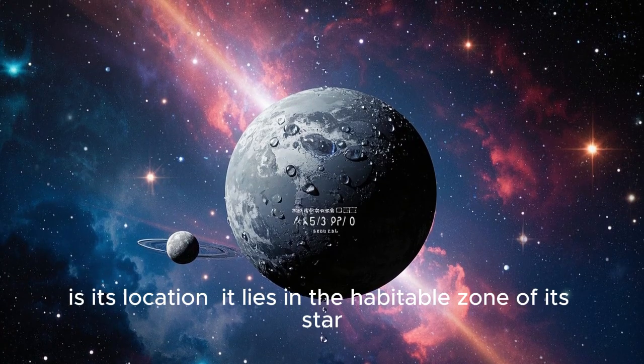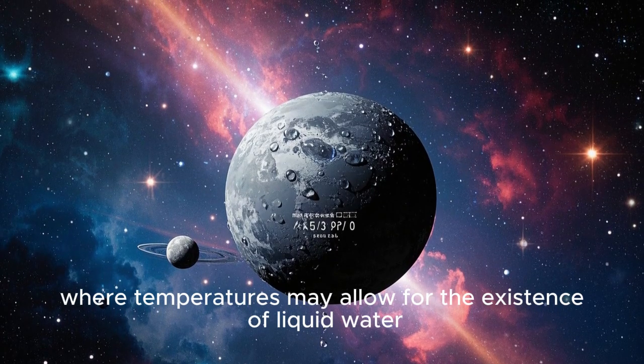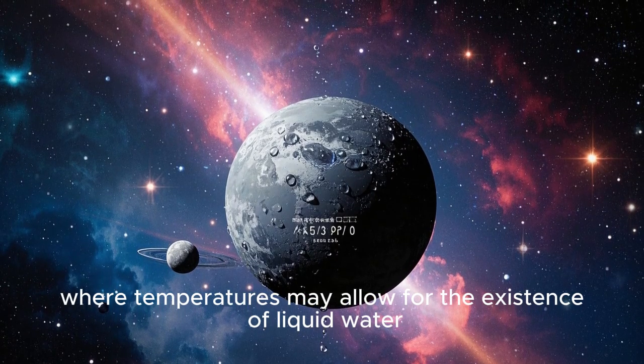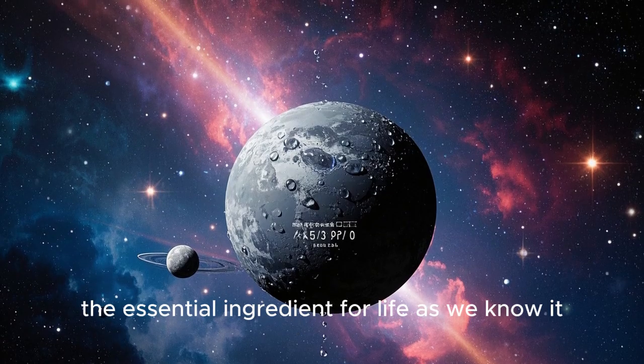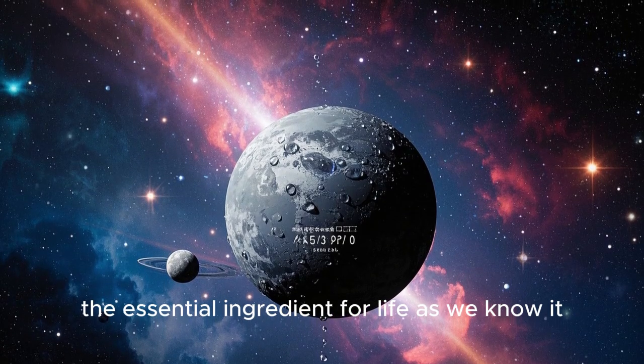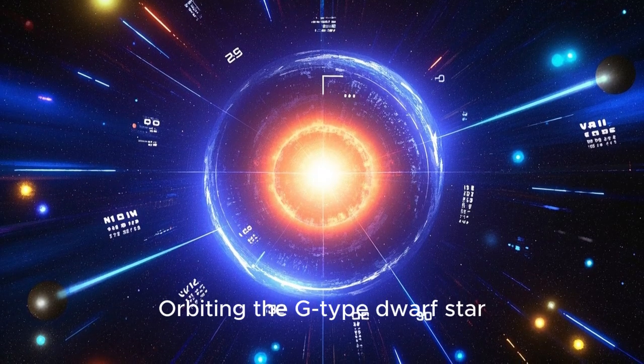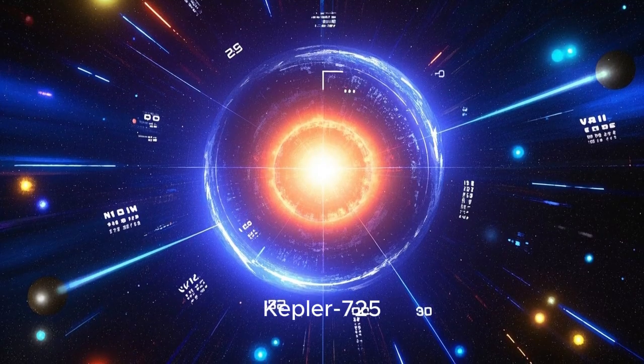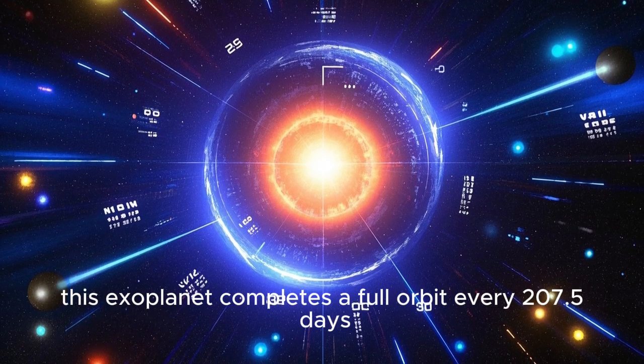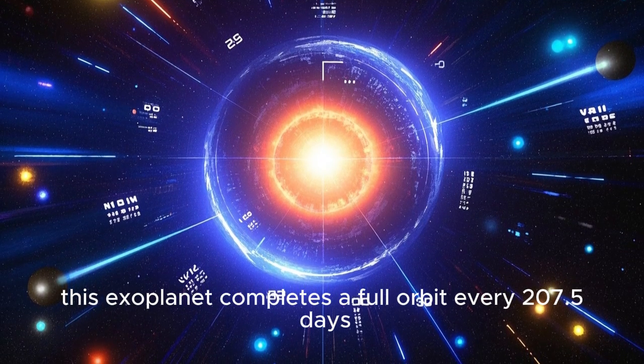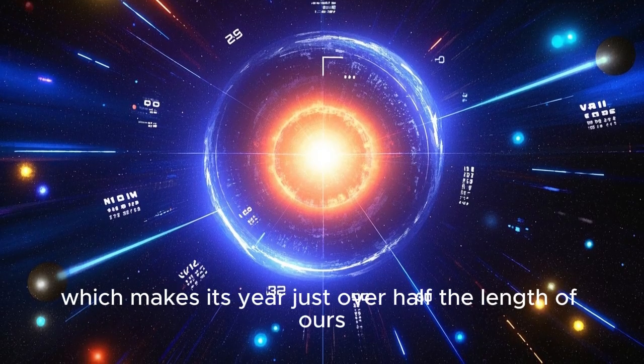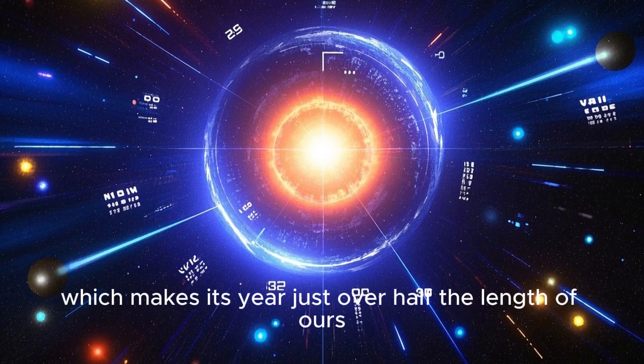It lies in the habitable zone of its star, where temperatures may allow for the existence of liquid water, the essential ingredient for life as we know it. Orbiting the G-type dwarf star Kepler-725, this exoplanet completes a full orbit every 207.5 days, which makes its year just over half the length of ours.